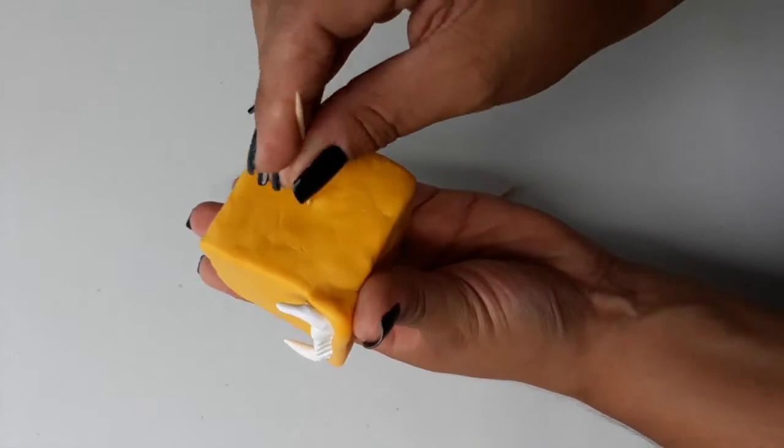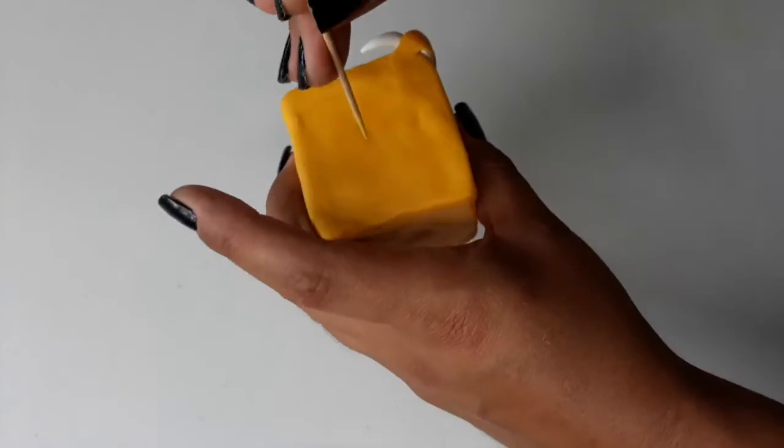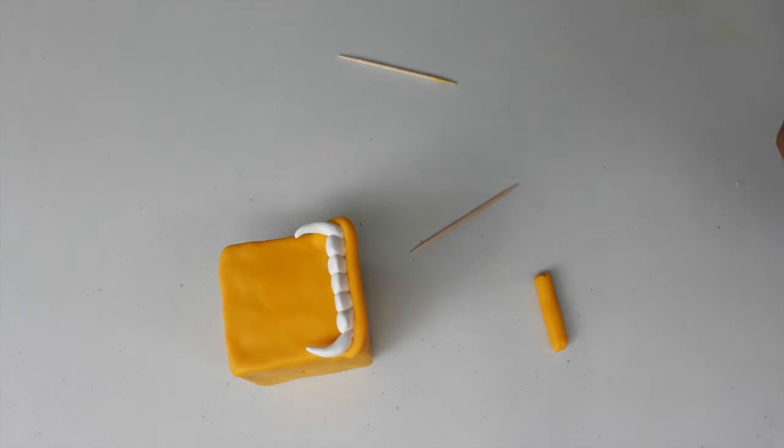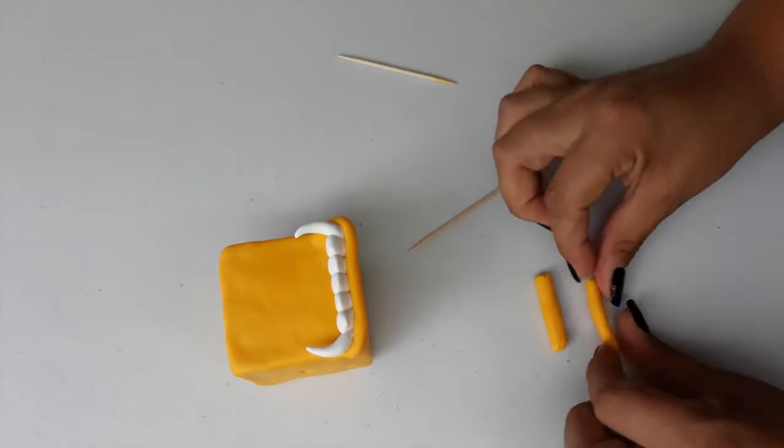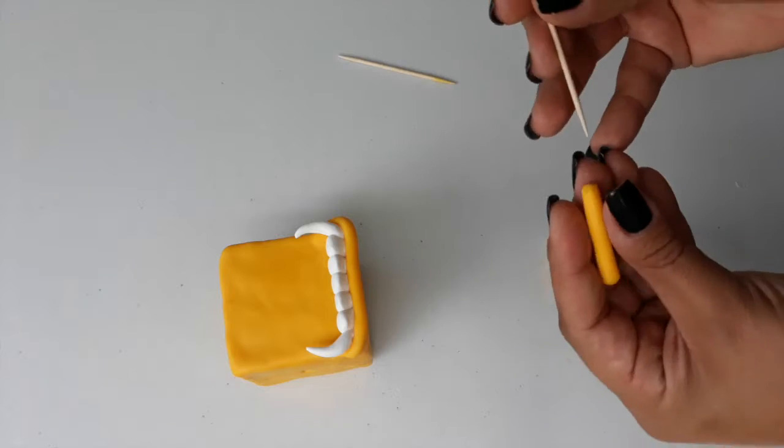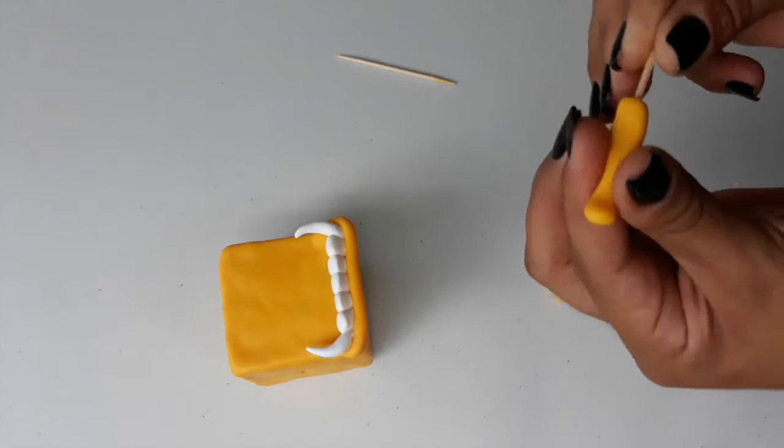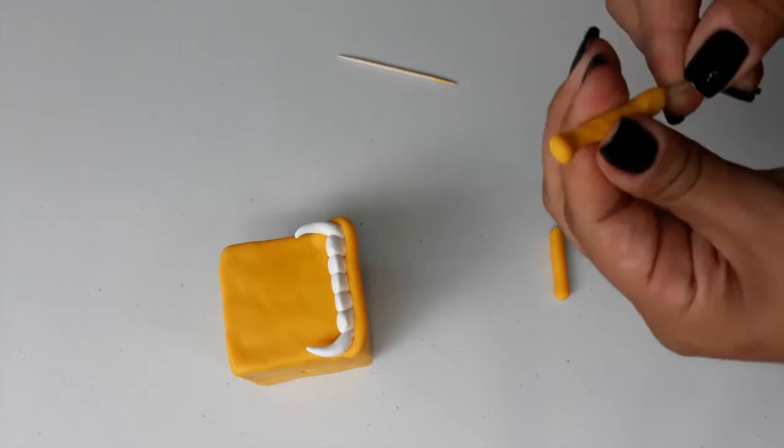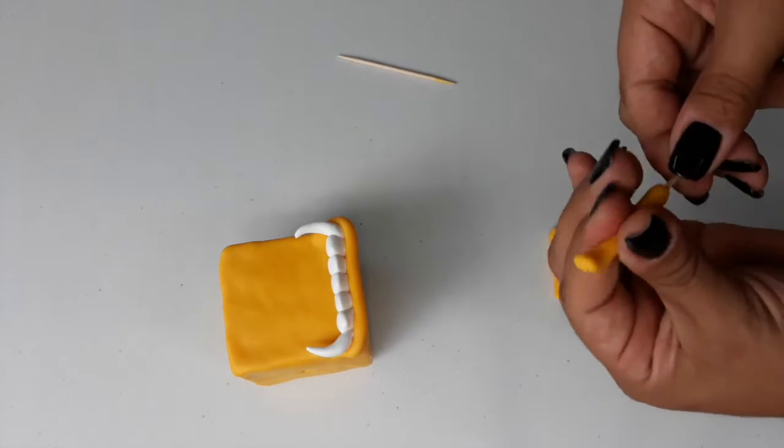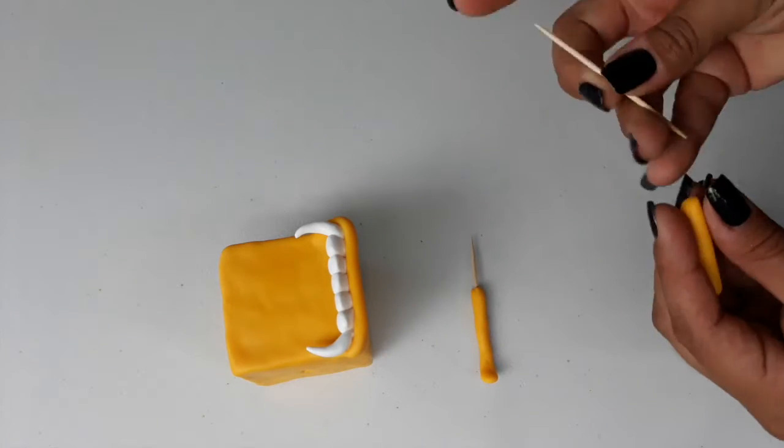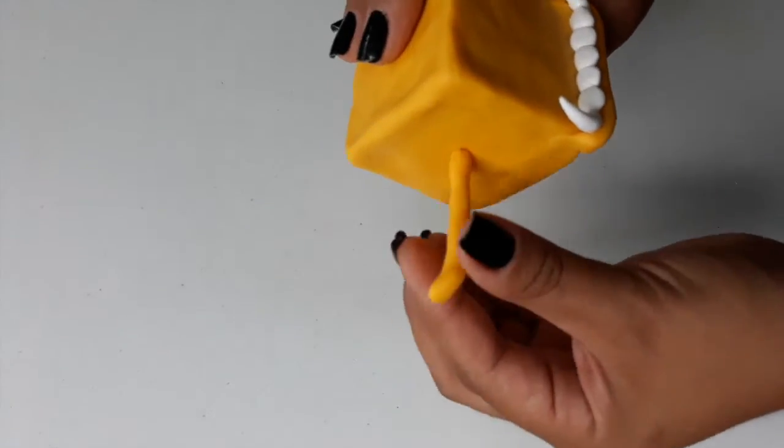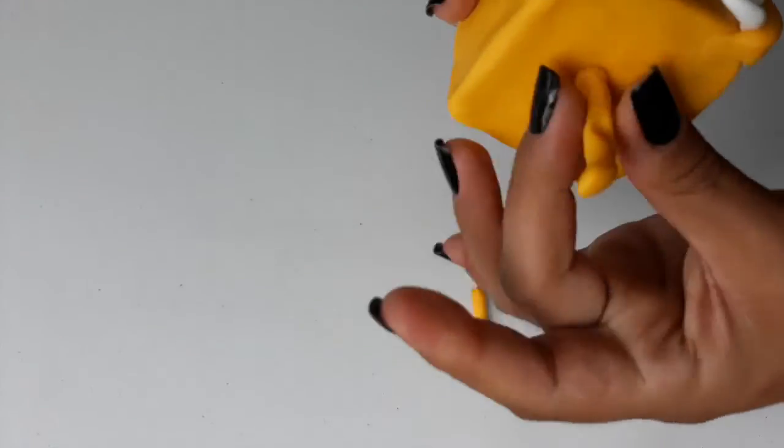Now to add some arms. Poke a hole into the middle of each of the sides of Monster Brother's cube body. Roll two balls of clay the same color as Monster Brother's body, we're going to keep using yellow, into long cylinders. Guide one toothpick into one yellow cylinder until the toothpick is about halfway covered with clay and there's still enough clay left at the end to angle out to make a little hand. Repeat with the other yellow cylinder and toothpick. Gently insert each toothpick arm into the holes you created earlier.